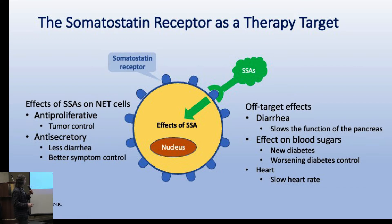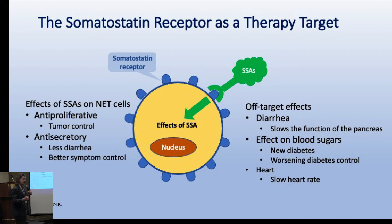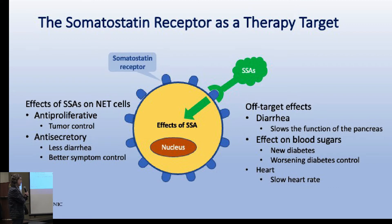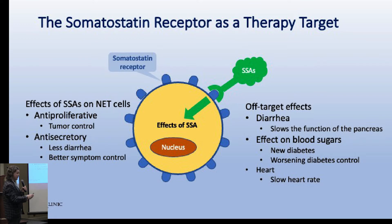When the drug binds to these receptors, it sends a signal into the cell to stop growing and stop making the chemicals that are making people sick. We see less diarrhea, and patients with functional neuroendocrine tumors from the pancreas will have fewer symptoms. Unfortunately, it doesn't really work forever - usually after a number of years, the cancer cells figure out a way around this.